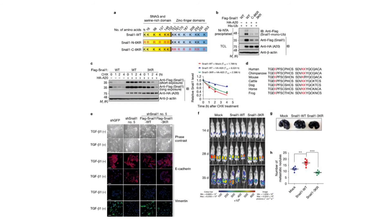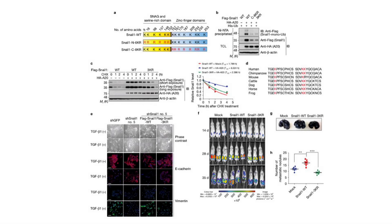In figure six, the researchers examined specific lysine residues where SNAIL1 is expected to be monoubiquitinated by A20. They found three lysine residues within the 8KR region that are necessary for SNAIL1 monoubiquitination — not all eight were required, only three. This was demonstrated through both western blots and mouse experiments, proving that the 3KR region within SNAIL1 is vital for A20-mediated monoubiquitination.